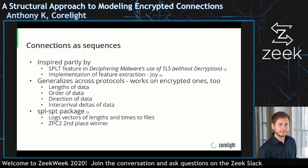This work generalizes across protocols, including encrypted ones, because it takes four pieces of information into consideration: the lengths of messages exchanged in a connection, the order those messages are exchanged, the direction those messages were sent — so who was the originator and who was the responder — as well as the inter-arrival times of messages sent during a connection. There's an open source package that implements some of these things called SPLT, which took second place in the most recent Zeek package contest and will log those four pieces of information to files for you to analyze.